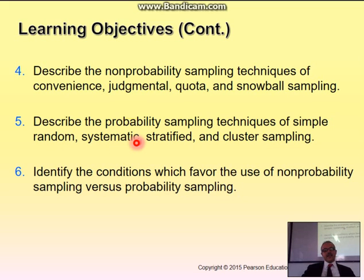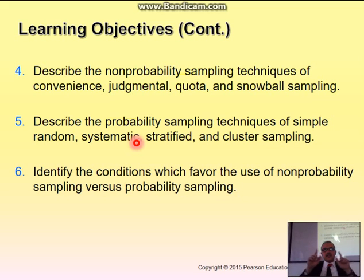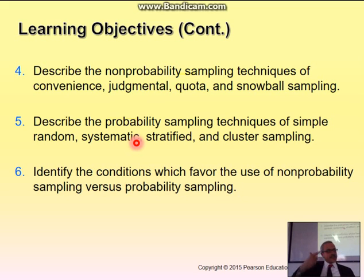Systematic sampling is when you go by a system — maybe every 10th customer. You take a random table, and by a system of random numbers, you select every 25th customer until you reach the end.